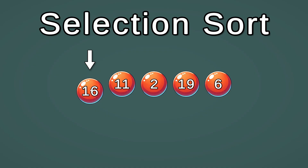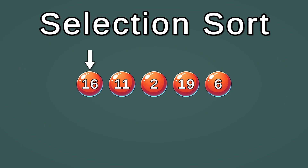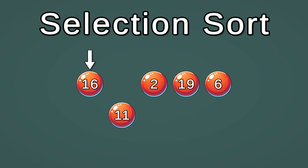We start by selecting 16 and we compare with other elements to see if there's a smaller number in the array. 11 is smaller than 16, so we select 11 as our smallest number.